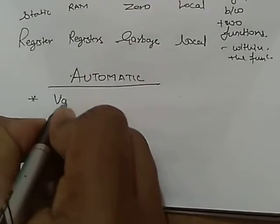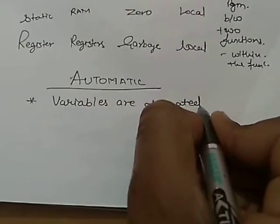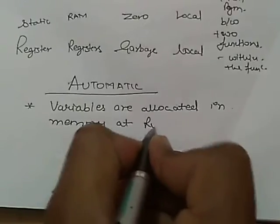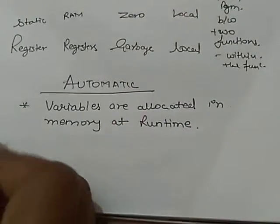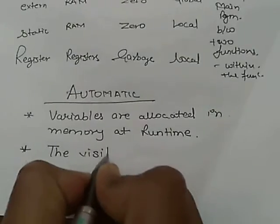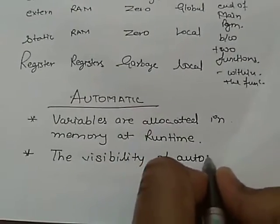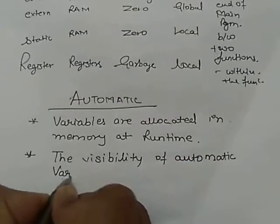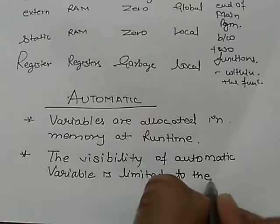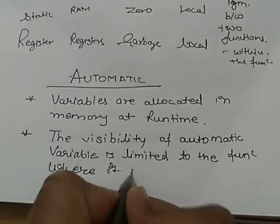Automatic variables are allocated in memory at runtime. The visibility of the automatic variable is limited to the function where the scope is defined.